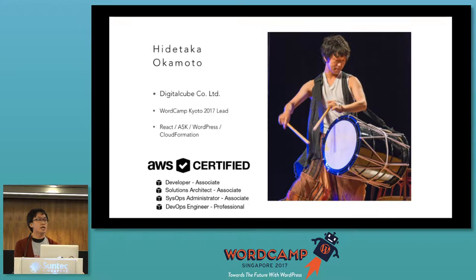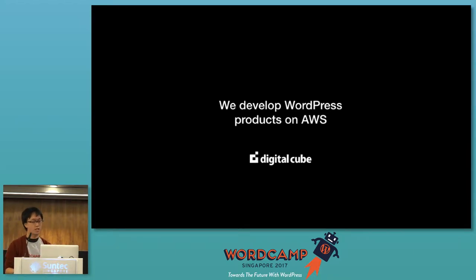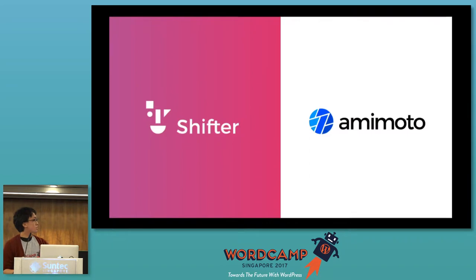My name is Hidetaka Okamoto and I come from Japan. I was the organizer of WordCamp Kyoto this year. Our team named DigitalCube works with WordPress on AWS, and we have two hosting services named Shifter and Amimoto.